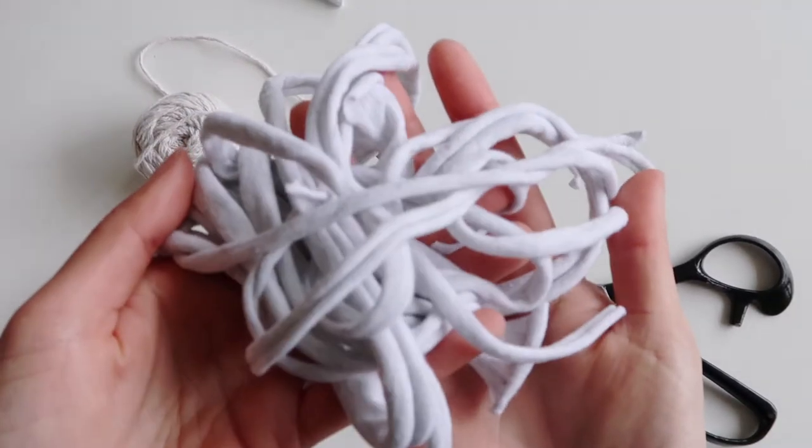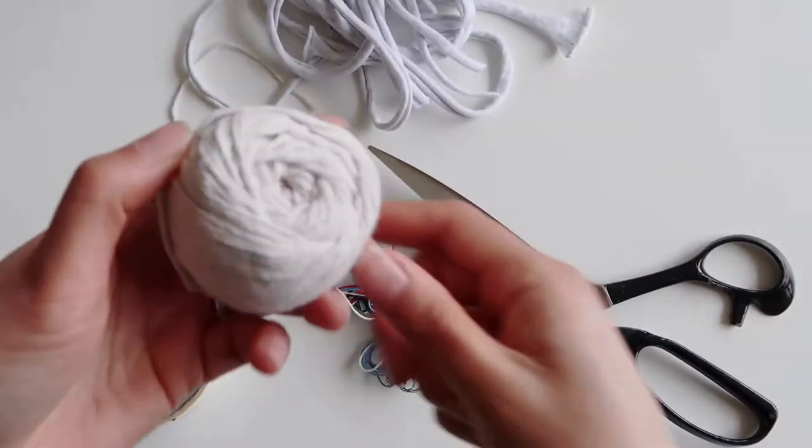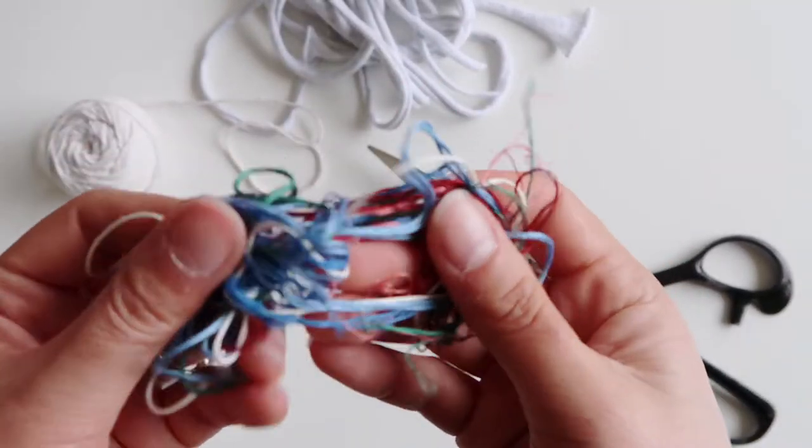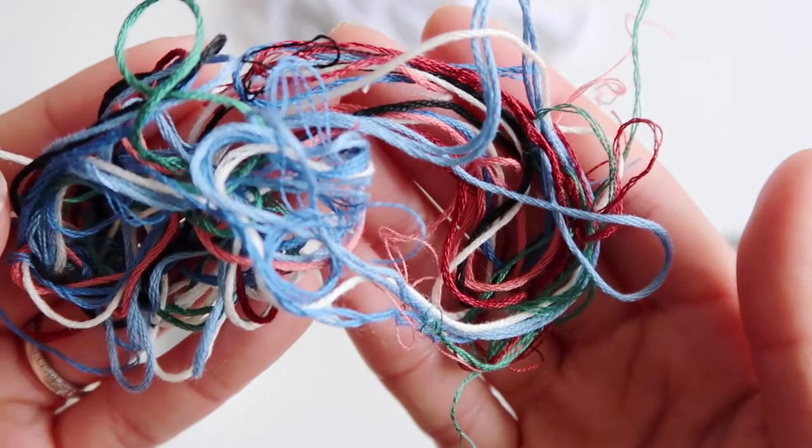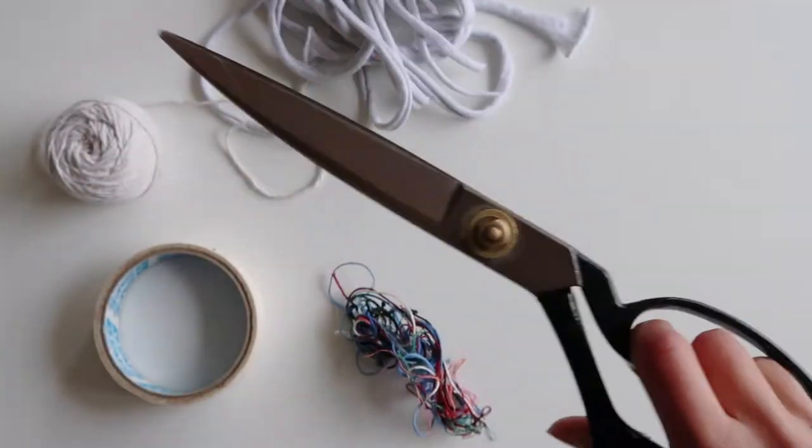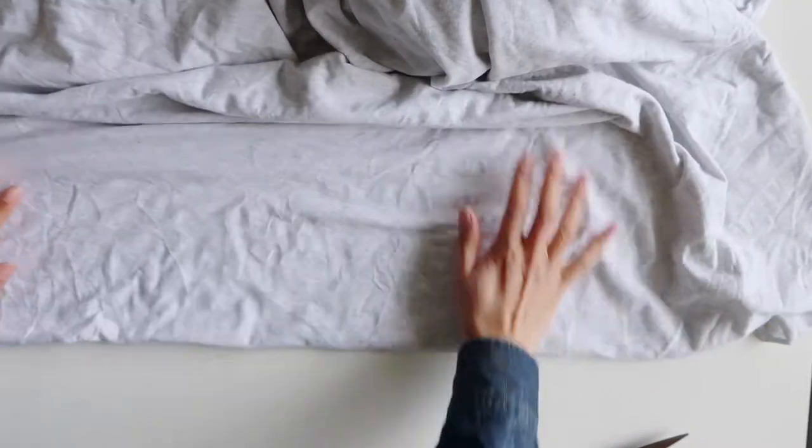For this project we will need some of this t-shirt yarn which I'll show you how to make, we could use household string like I said, or I also found this leftover cross stitch thread which would also be really cute, some masking tape and some scissors.